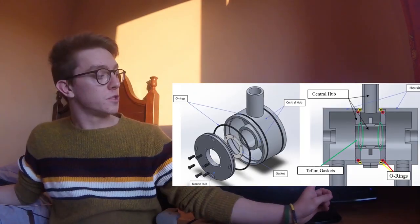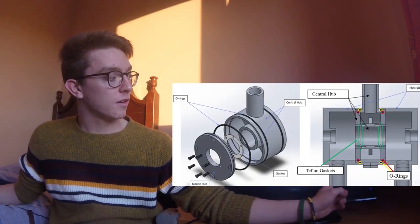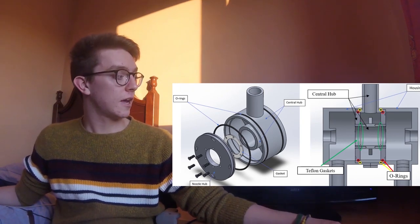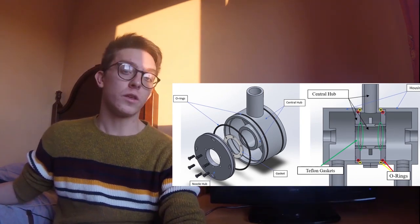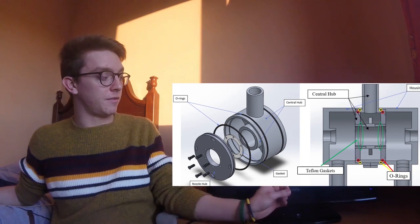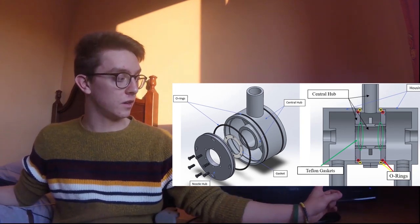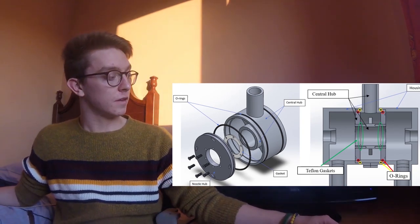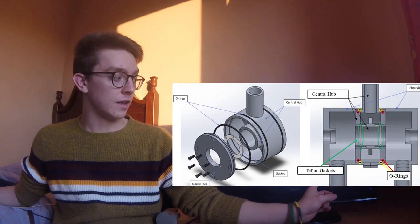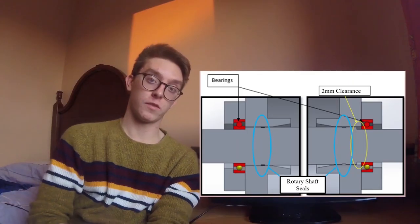Overall, there are 18 points identified. Two O-rings identified here with the red circles and two Teflon gaskets identified with the green circles were used to seal between the nozzle hub and the central hub.